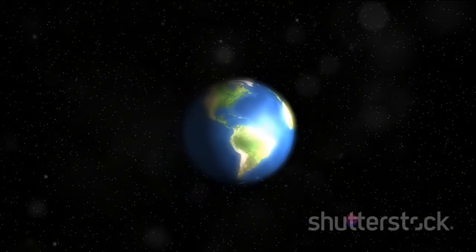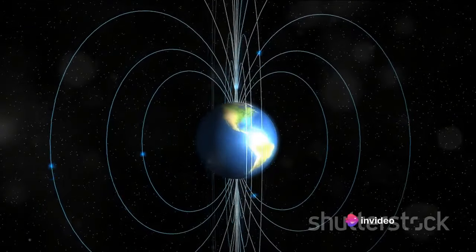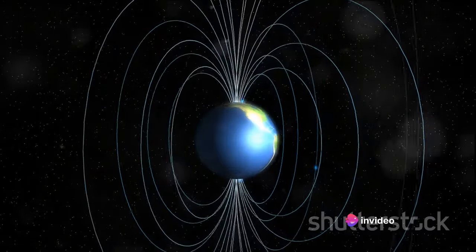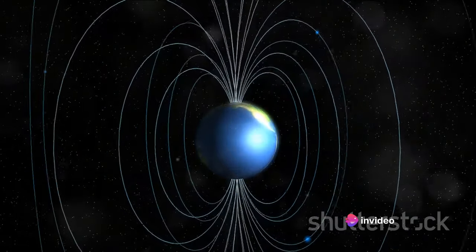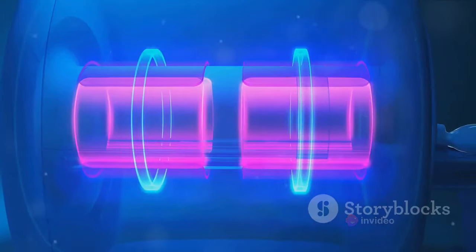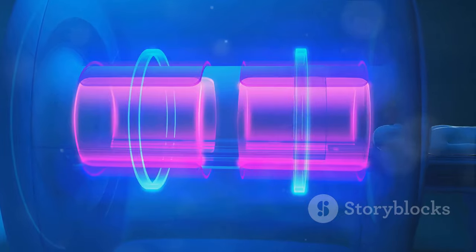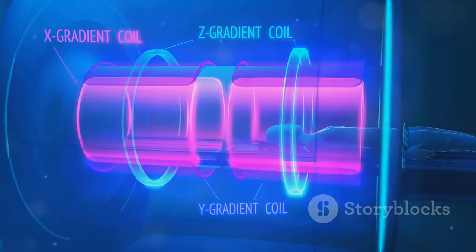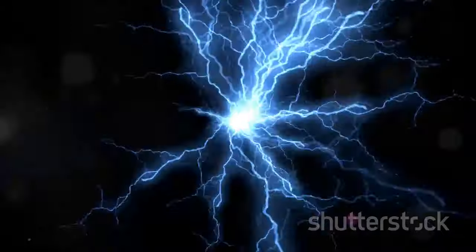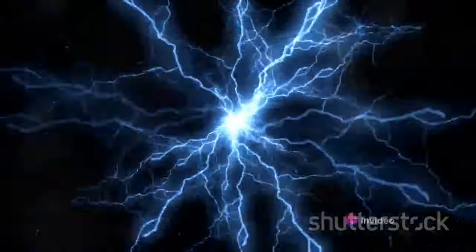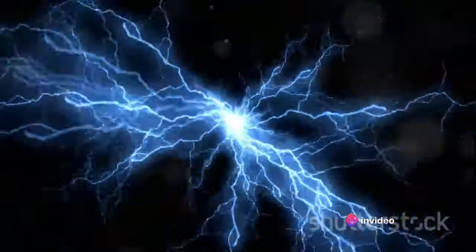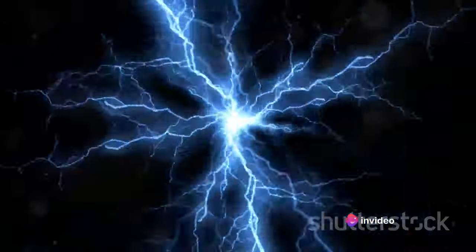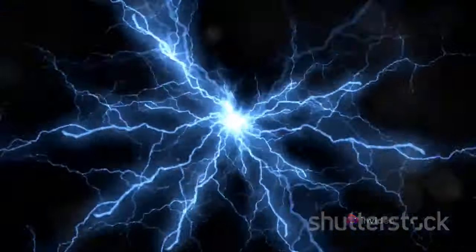Now you might wonder, why does the coil do this? It all comes down to a property known as magnetic field. When current flows through a coil, it creates a magnetic field around it. When the current changes, so does the magnetic field. And this changing magnetic field induces a voltage in the coil, which opposes the change in current. This is the essence of self-inductance.